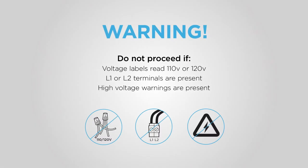Check your thermostat's wiring to see if you have a line voltage system. Do not proceed if voltage labels read 110V or higher, or if you see terminal blocks listed as L1 or L2, or if you see any kind of danger, warning, or caution symbol. In these cases, your system is a line voltage system and you're unfortunately not compatible.